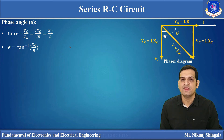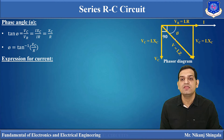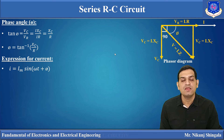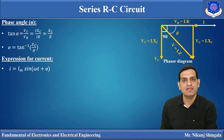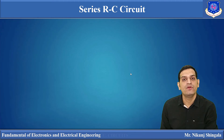Therefore, φ = tan⁻¹(XC / R). Using this value of φ, and since the circuit contains a capacitor, current leads the applied voltage by angle φ. The final expression of current has a positive phase angle. If the applied voltage is v = Vm sin(ωt), then the expression for current is i = Im sin(ωt + φ). For a series RC circuit, current leads the applied voltage by angle φ, where φ is between 0 and π/2.